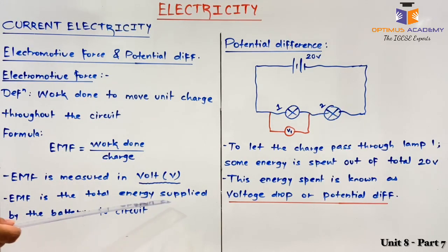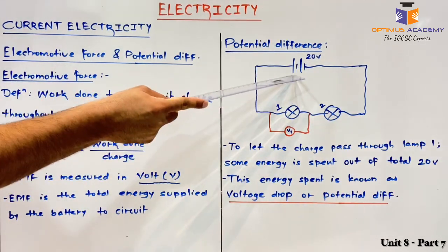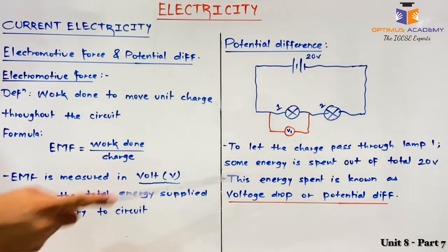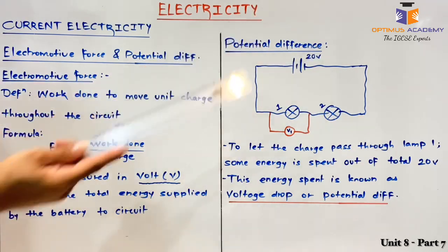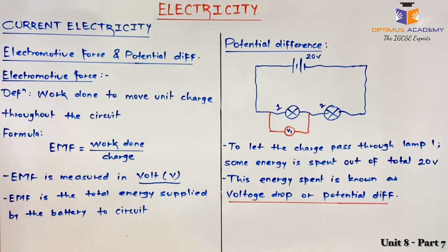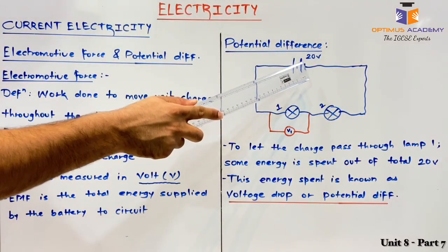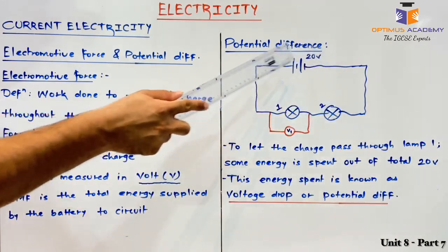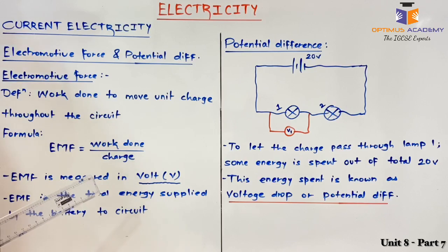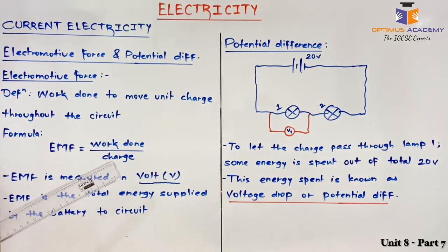Also note that EMF is the total energy supplied by the battery to the circuit. So if I consider this circuit, I am having a battery of voltage 20 volt. The total energy this battery would supply to the circuit is 20 volt. Now we will discuss about what is potential difference. Please note that electromotive force and potential difference are not the same — they are different. We will try to explain how they differ from each other.